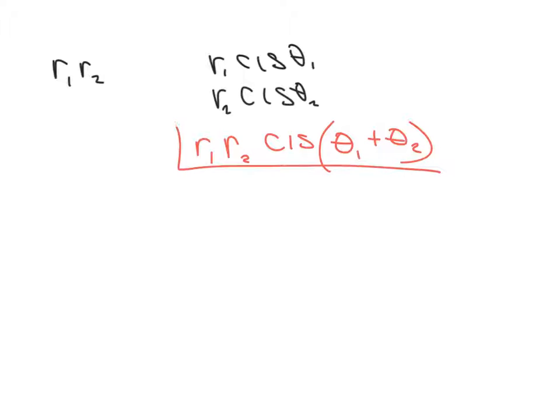Here is how I multiply these together. I just have a formula. It's r1, r2, cis, theta 1 plus theta 2. So there's the formula. Let's try this formula out.